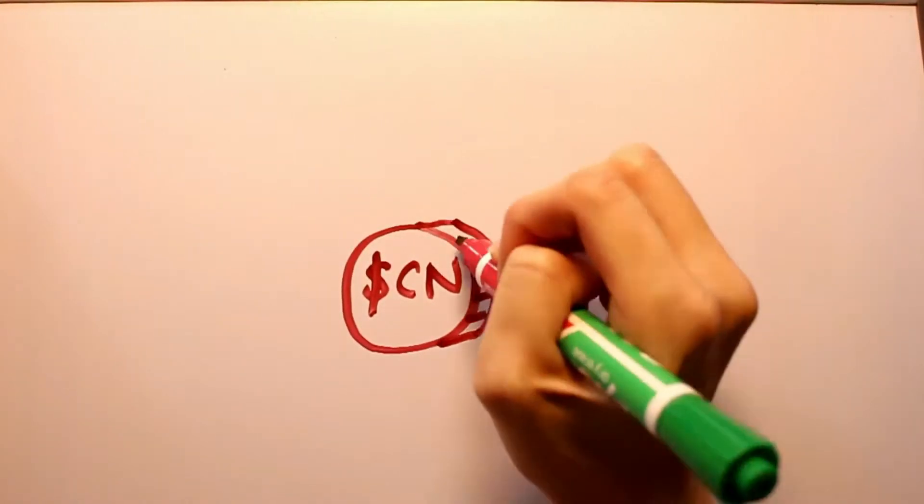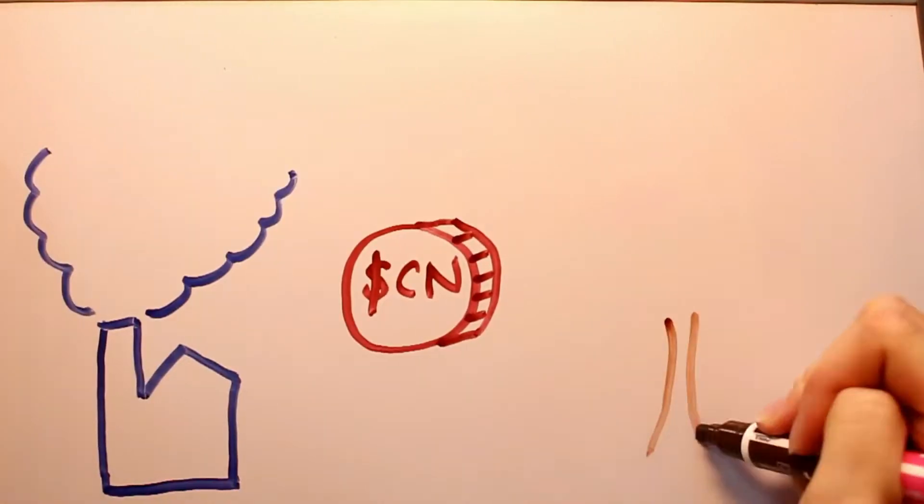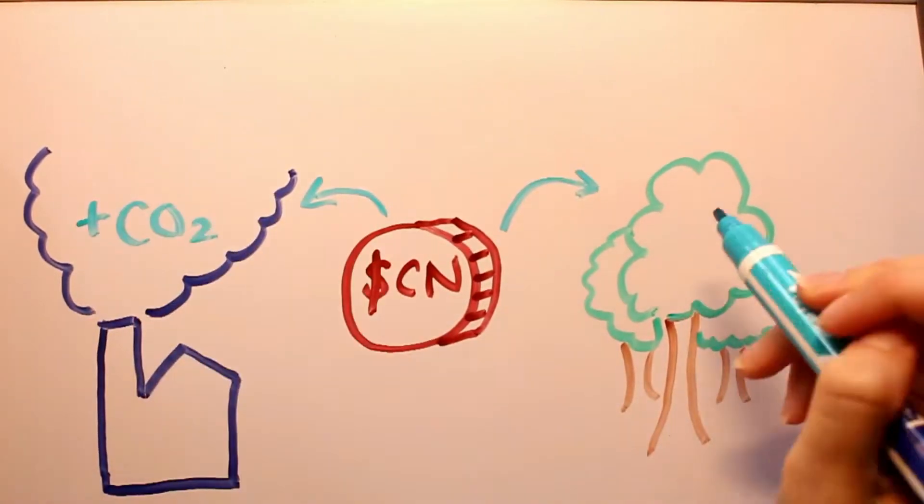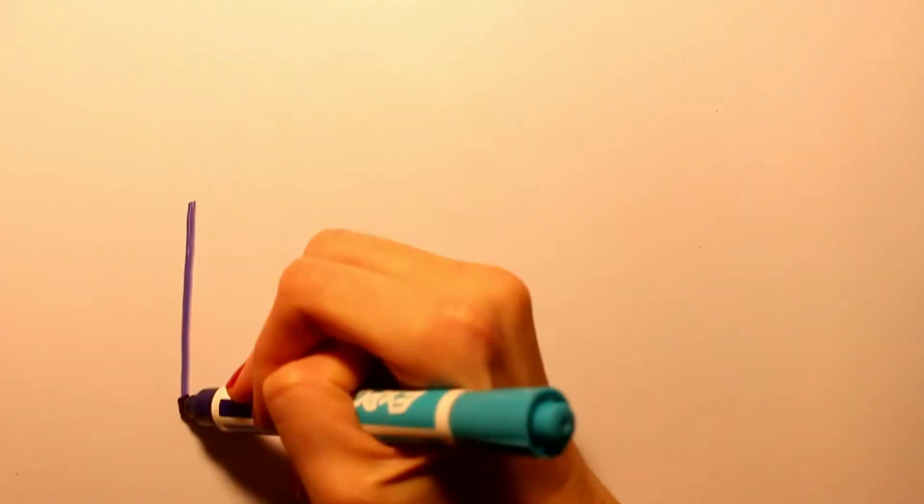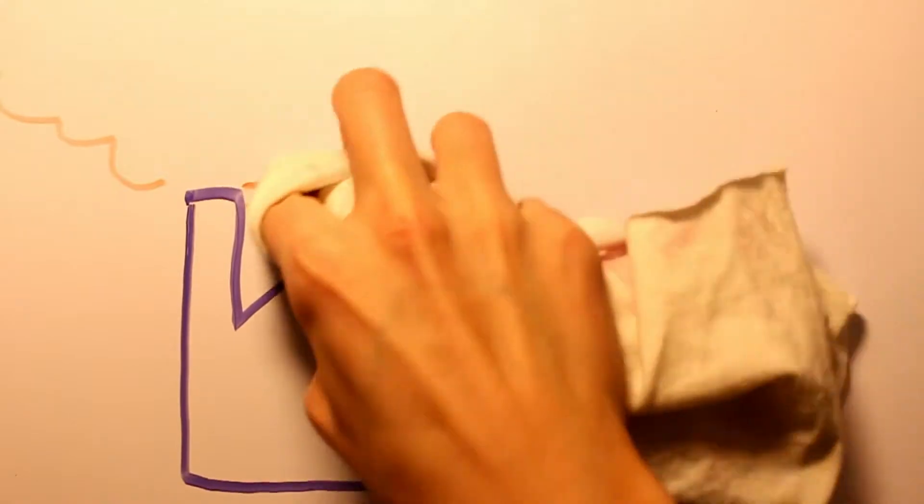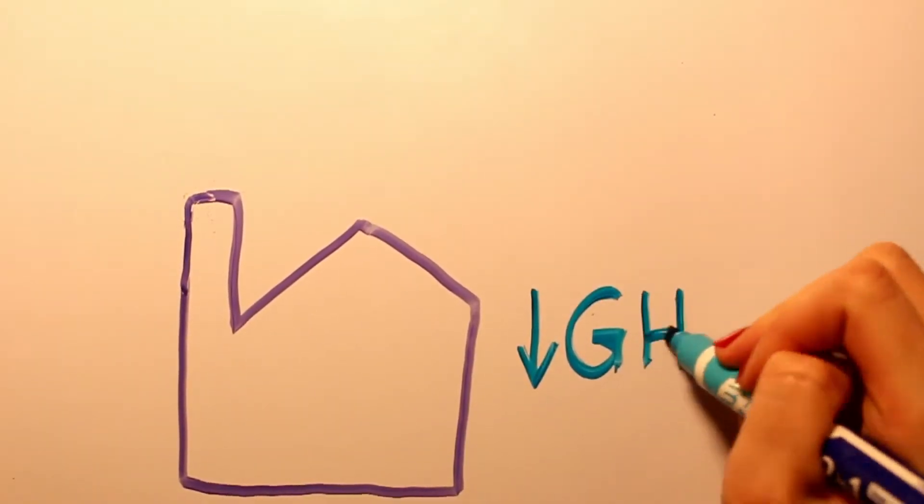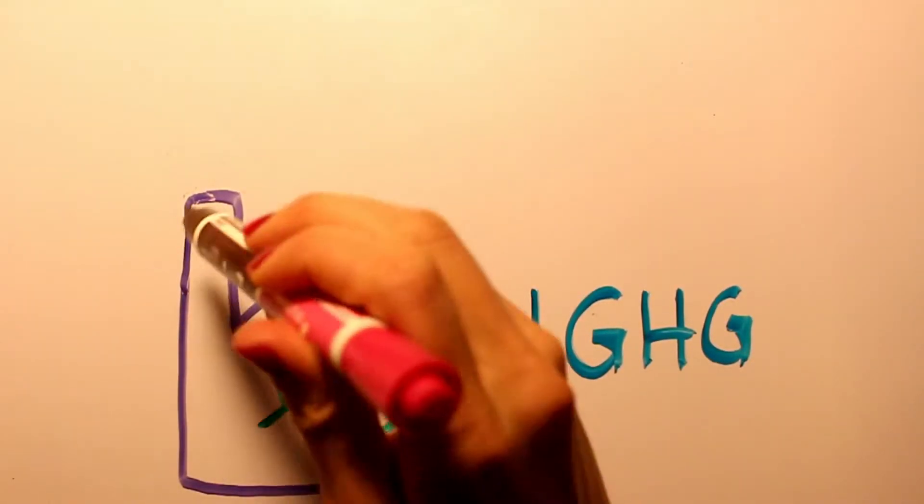When you participate in the carbon neutral program, you purchase credits that will be used to fully offset greenhouse gas emissions from the manufacturing of the product. Some of our suppliers have been able to drastically reduce their greenhouse gas emissions so that we can distribute their product at a low cost for carbon offsetting.